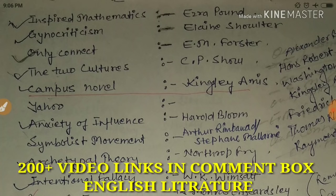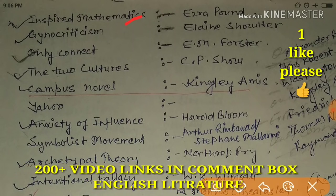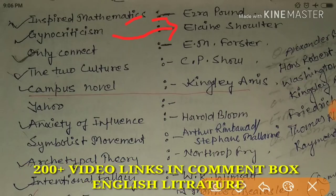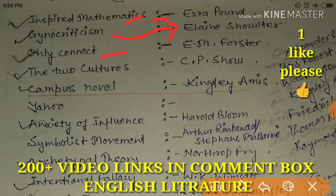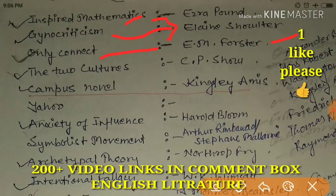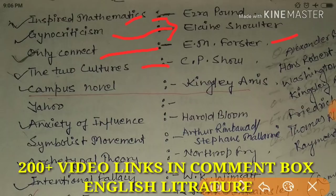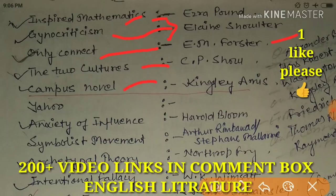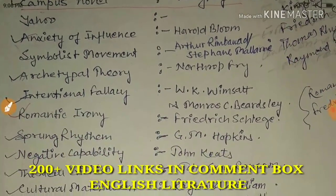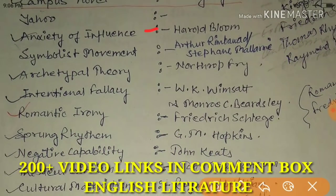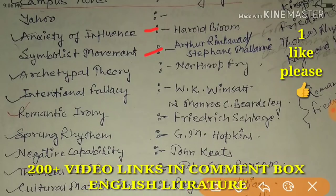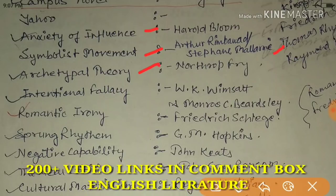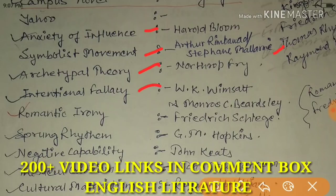Let's start today's video. 'Imagisme' is related to Ezra Pound. 'The Two Cultures' is by C.P. Snow. 'Campus Novel' is by Kingsley Amis. 'Anxiety of Influence' is by Harold Bloom. 'Symbolist Movement' is associated with Arthur Rimbaud and Stéphane Mallarmé. 'Archetypal Theory' is by Northrop Frye. 'Intentional Fallacy' is by W.K. Wimsatt.